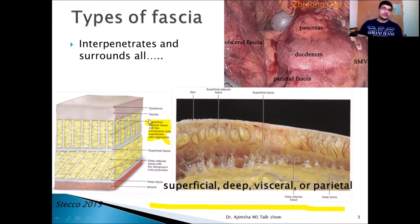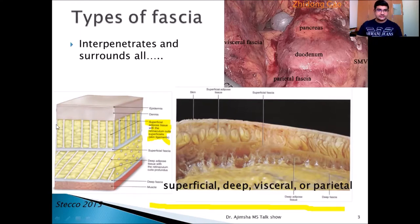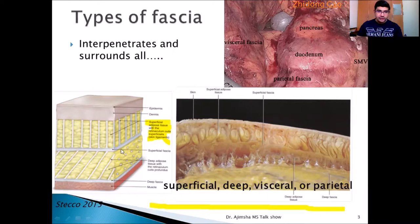To understand superficial and deep fascia, it's better to visualize the skin and muscle layers. You can see the epidermis and dermis — the skin — and after that a lot of fat cells called the superficial adipose tissue, or SAT. After that you can see a thinner white layer — this is called the superficial fascia.